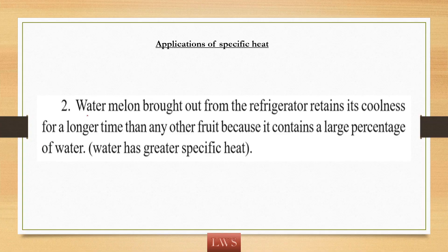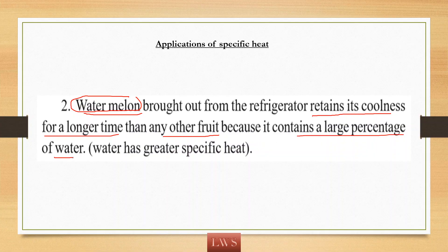Let us look at another example. If we keep a watermelon in the refrigerator for some time along with other fruits, when we compare, the watermelon retains its coolness for a very long time. Why? Because in watermelon, there is a large percentage of water. As water has the highest — that is, greater — specific HEAT, it shows reluctance to temperature change. Because of that reason, the watermelon retains its coolness for a very long time.